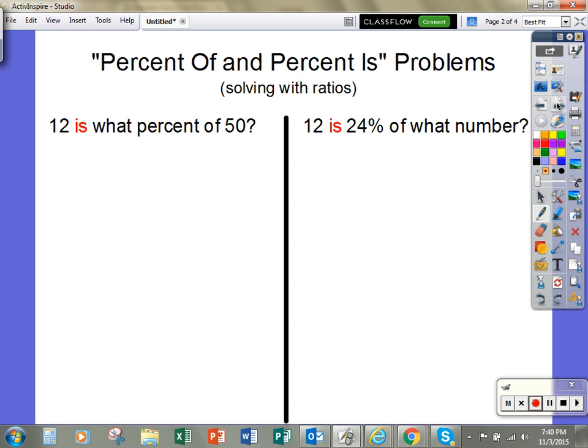Today, we're going to learn how to find a missing percent or a missing total. There are two ways to do this. The first way is to solve with ratios. Let's look at our sample problem.